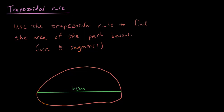Here is a shape — in this case it's a map of a park — and you can see that the length of the park is 100 meters, which is provided. We want to use the trapezoidal rule to find the area of the park. But before we apply the rule, we need to find the scale factor used to draw this map, because without it we can't measure any other lengths.